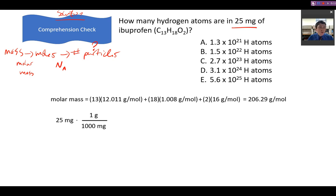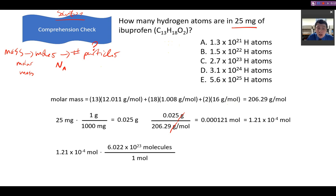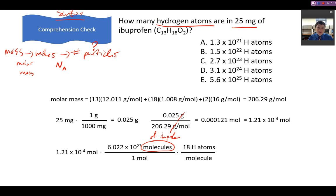To find how many moles, convert from milligrams to grams, then use the molecular mass of ibuprofen — gram units cancel, leaving the number of moles. Now, to find the number of particles, be careful: multiplying moles by Avogadro's number gives the number of ibuprofen molecules. To find how many hydrogen atoms there are, you also need to multiply by the number of hydrogen atoms per molecule. Once you do that, you get the total number of hydrogen atoms in the 25-milligram sample.